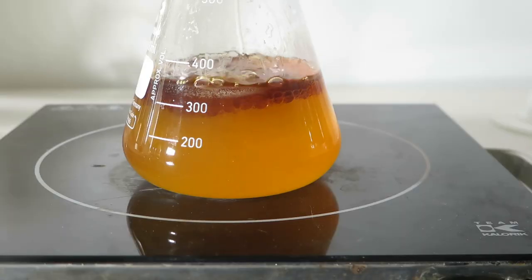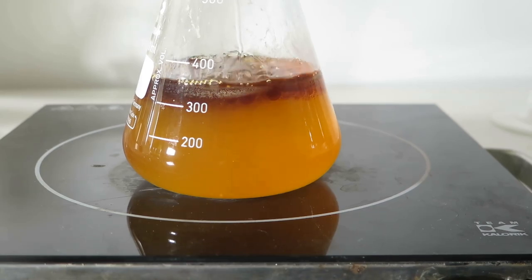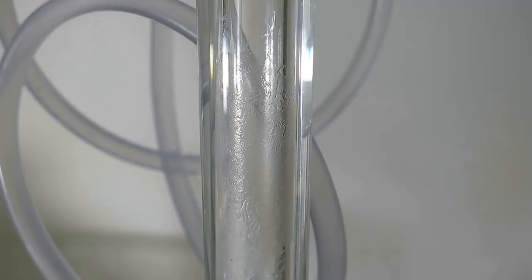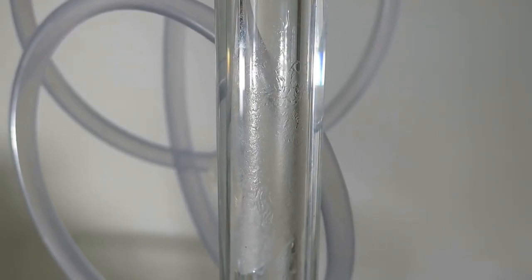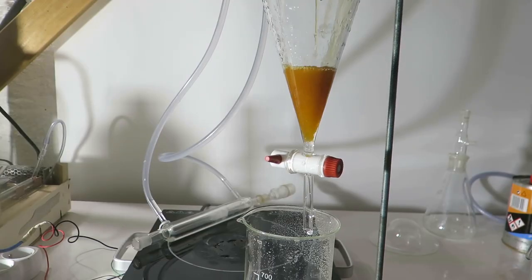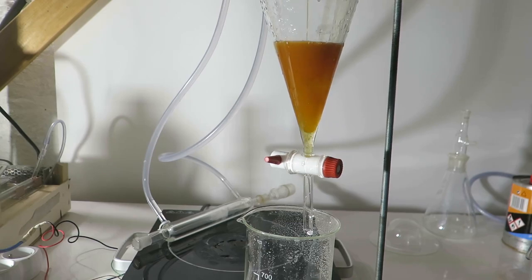The organic layer looked red and the aqueous layer started to look milky again. There are some crystals in the condenser, and this is probably hexamine, and it is because initially when the thing erupted a little bit, it threw a lot of vapor up there.